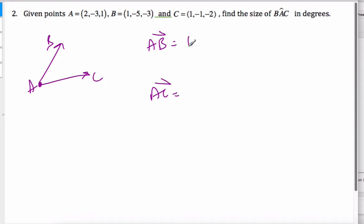I go head minus tail. So 1 minus 2 is negative 1, negative 5 plus 3 is negative 2, negative 3 minus 1 is negative 4. Look at AC: 1 minus 2 is negative 1, negative 1 plus 3 gives me 2, negative 2 minus 1 is negative 3. So if I have these vectors, I am going to now go AB dot AC.